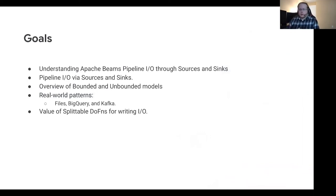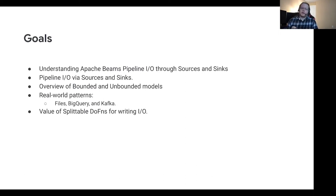Today we're going to be focusing on the sinks and sources of Beam IO. We're going to talk through what the distinction is between bounded and unbounded models — mechanically there aren't very many differences anymore, but pragmatically there are in terms of dealing with either a finite or potentially infinite data set. We'll talk through real-world patterns regarding file IO, BigQuery, and Kafka, and spend some time talking about how splittable DoFns are critical to writing a modern Beam IO.